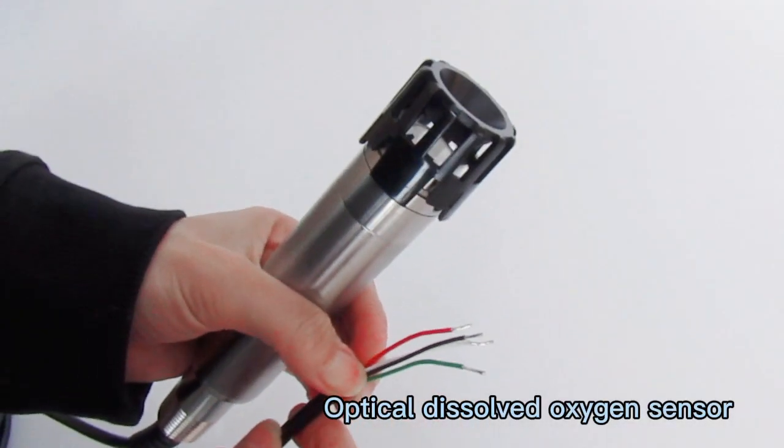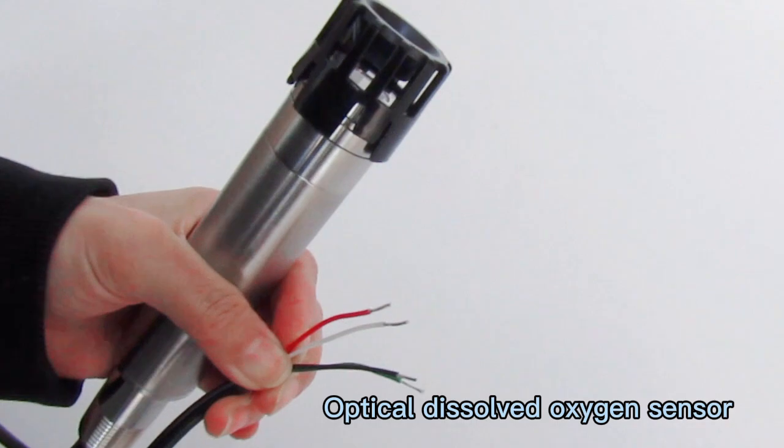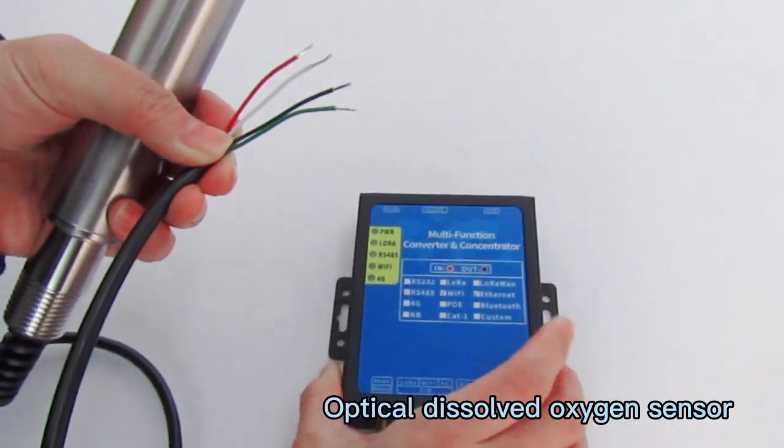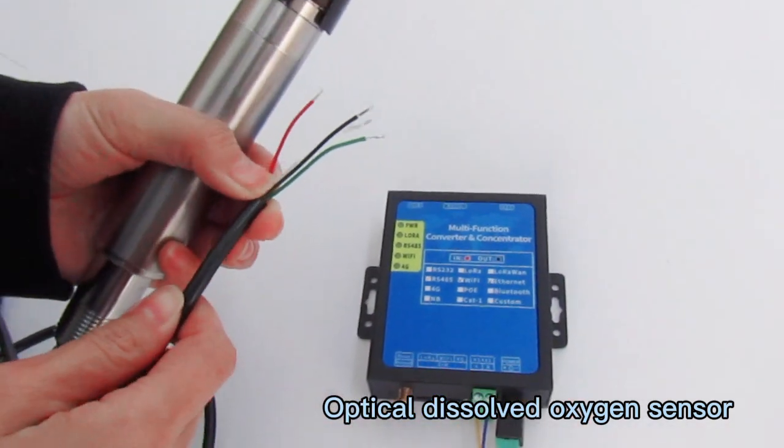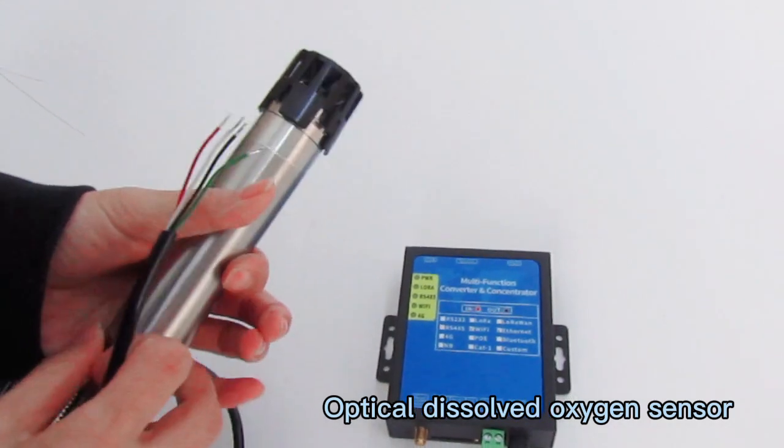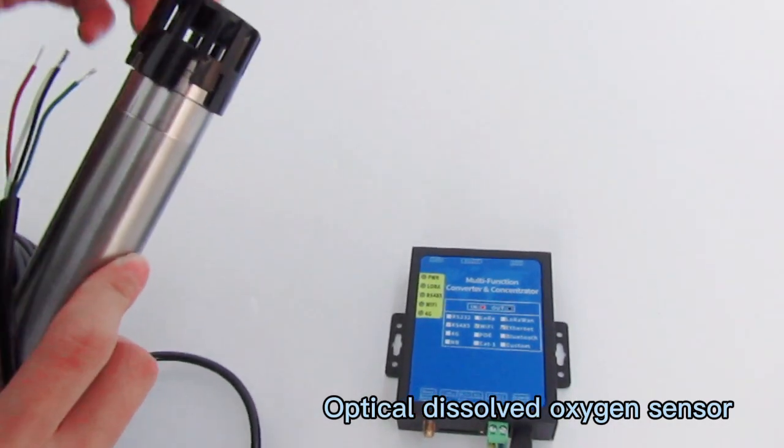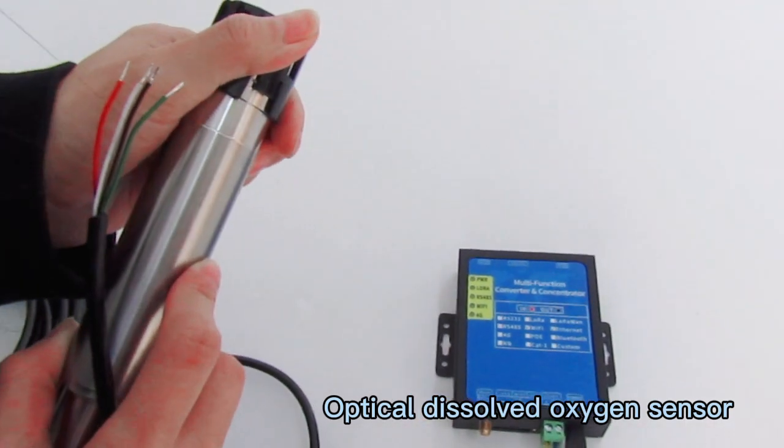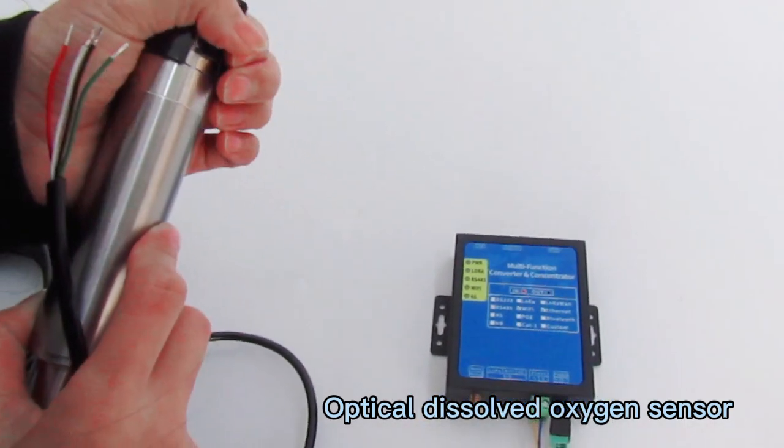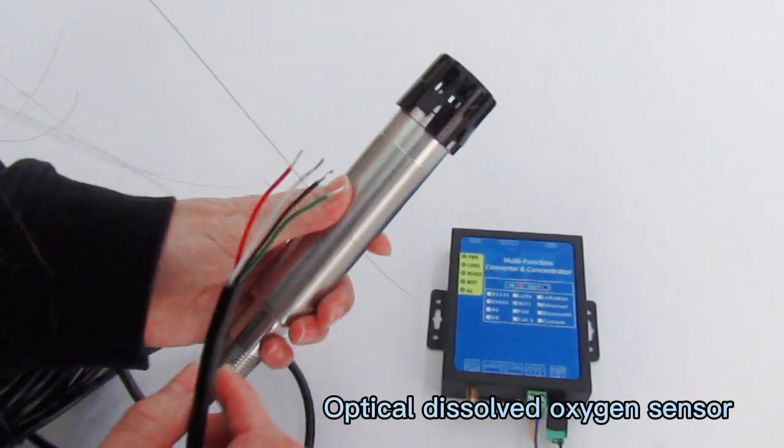The output is RS485, and we can integrate a wireless module to achieve wireless transmission. You can check real-time data on your PC using our wireless module, including 4G, Wi-Fi, LoRa, and LoRaWAN.